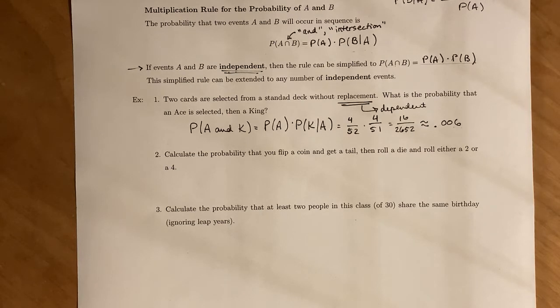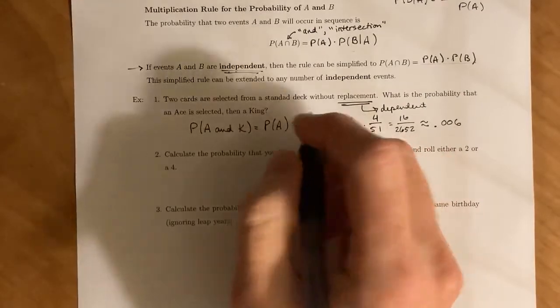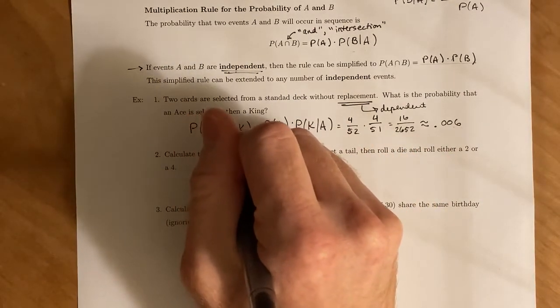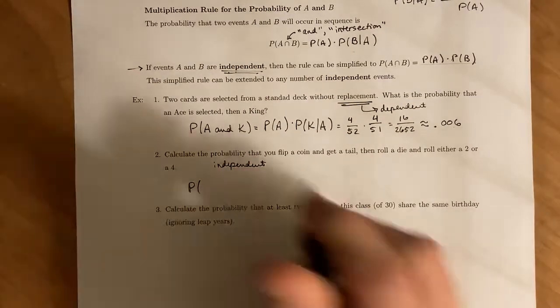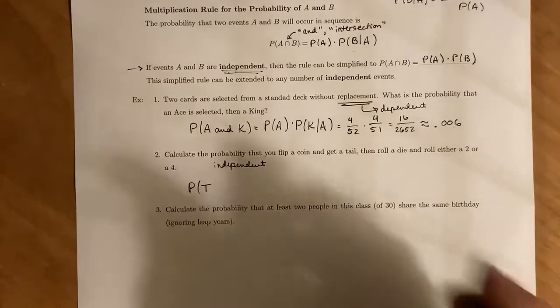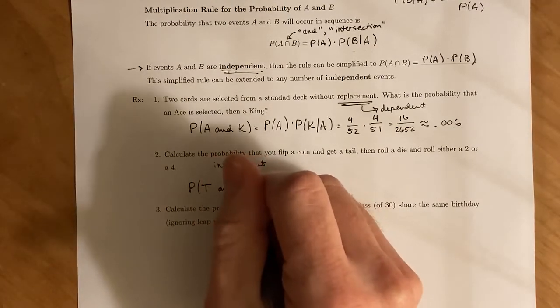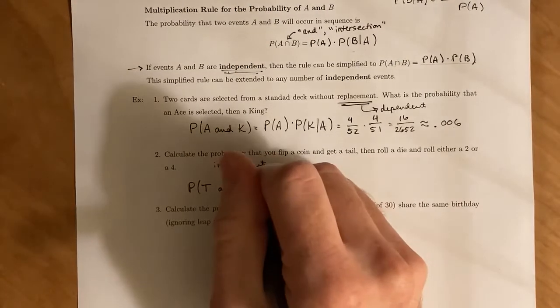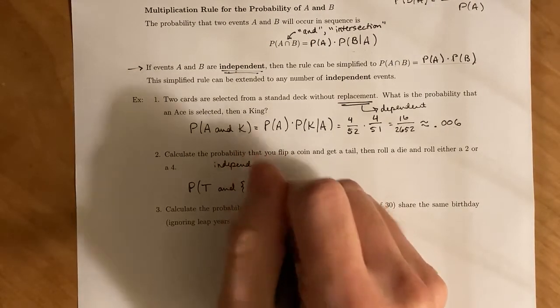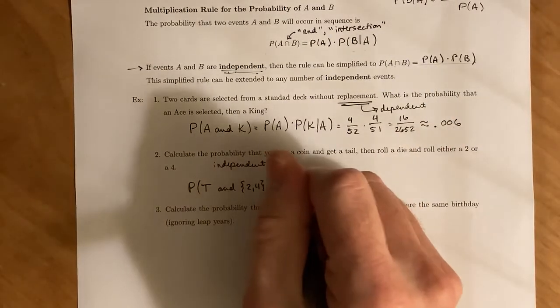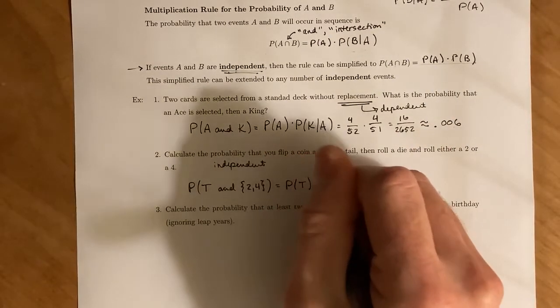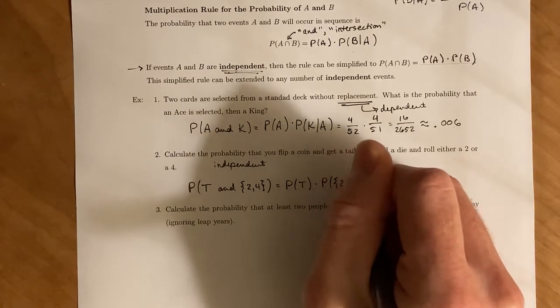So because you're doing these two things separately, doesn't matter what you get when you flip a coin, it's not going to impact what you get when you roll a die. So these two events are independent, which if we take the probability of getting a tails and then getting either a two or four, since they're independent, this and we use this rule up here, tells us that it's the probability of flipping the tails times the probability of rolling a two or four.